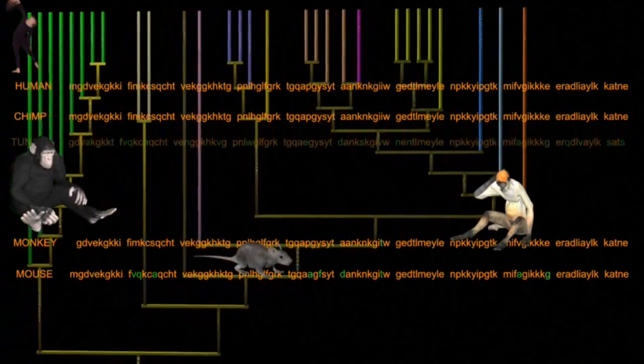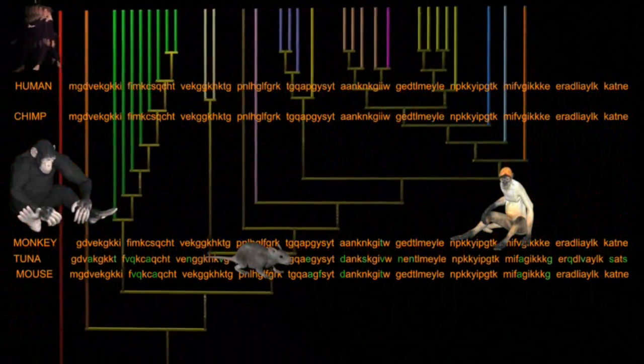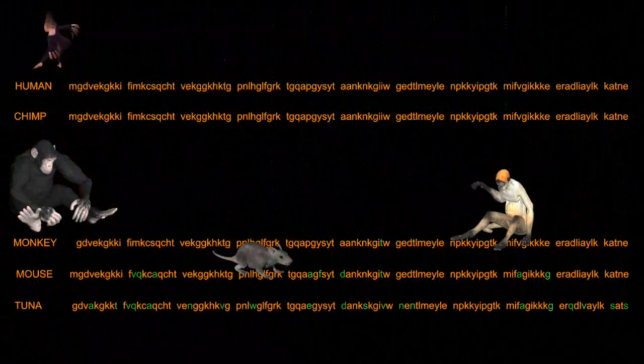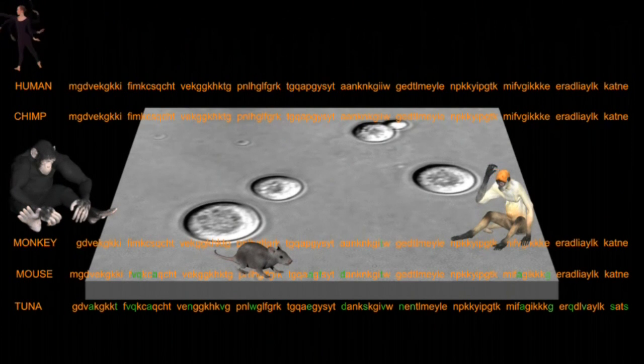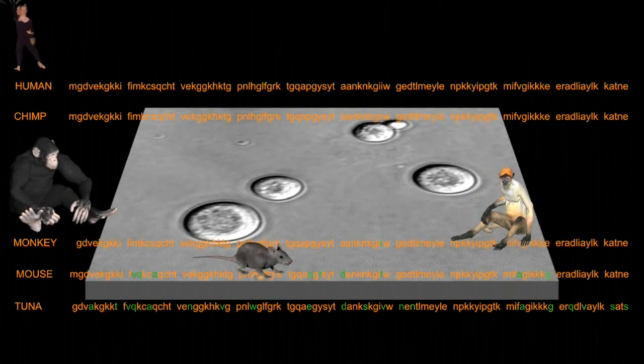The differences increase as we step further back in time and further from our own branch on the tree of life. The yeast itself has 51 amino acid differences from that of humans and chimps. And is one of the most distantly related organisms from humans having separated from our branch over a billion years ago.